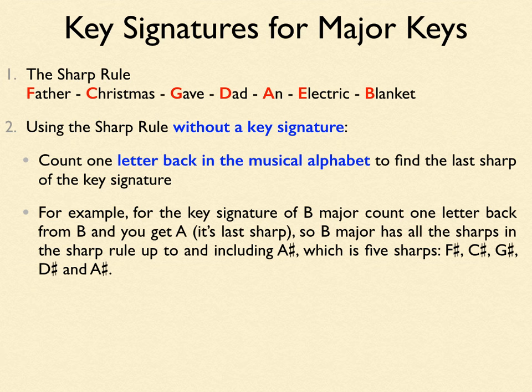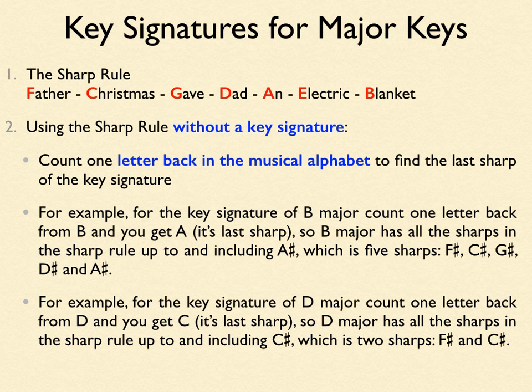Let's take another example. For D major: count one letter back from D and you get C, so C is the last sharp. D major has all the sharps up to and including C sharp — just two sharps: F and C sharp. For G major, count one letter back from G and you get F, so G major has just the one sharp: F sharp.